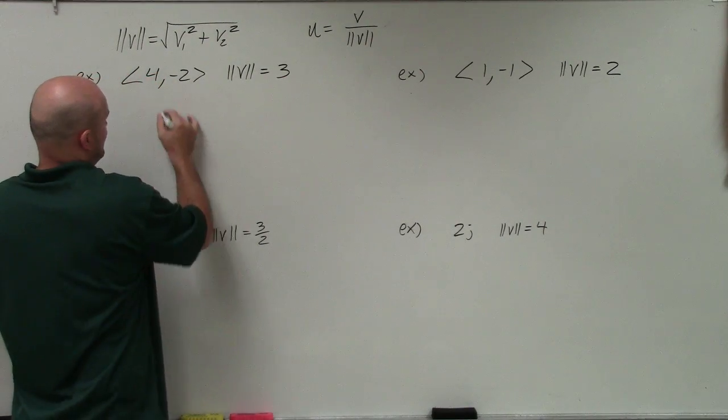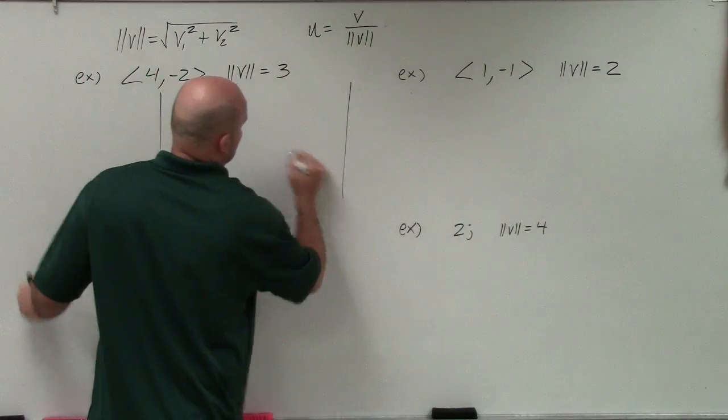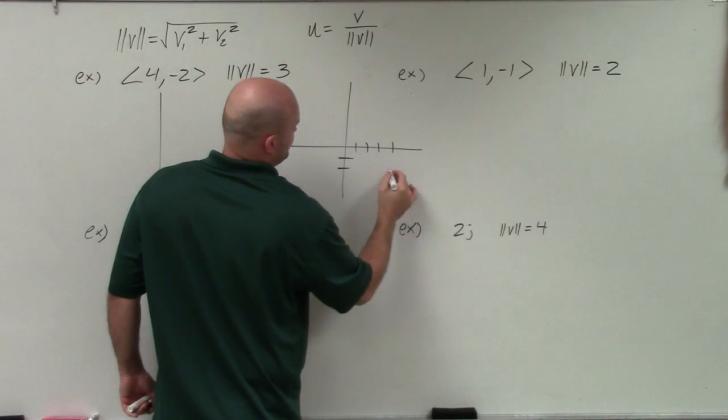If I have this vector 4 comma negative 2, now let's do that over here: 1, 2, 3, 4, negative 2. This vector does not have a magnitude of 3.